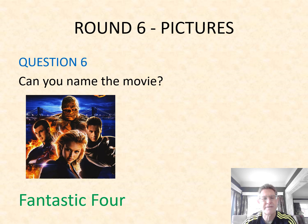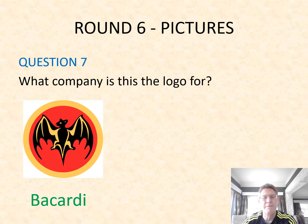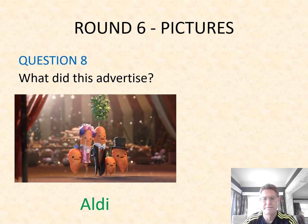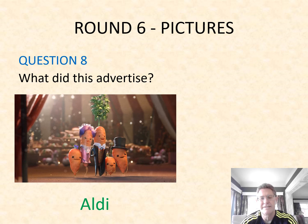Question six: can you name the movie from this picture? It is Fantastic Four. Number seven: what company is this the logo for? It's the logo for Bacardi — Bacardi Rum. And your final picture question, number eight: what did this advertise? It advertised Aldi the supermarket — Kevin the carrot, which always advertises Christmas.